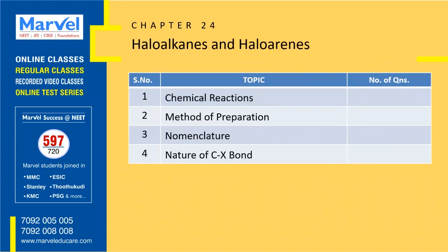Next chapter: 20 questions from the last 8 years, expecting either 1 or 2. The first topic itself has 14 questions, and the remaining 3 topics have 6 questions. The most important topic is chemical reactions. Once you concentrate on reactions, you will be able to do it better. Minimum 4, maximum 8 marks from this chapter.